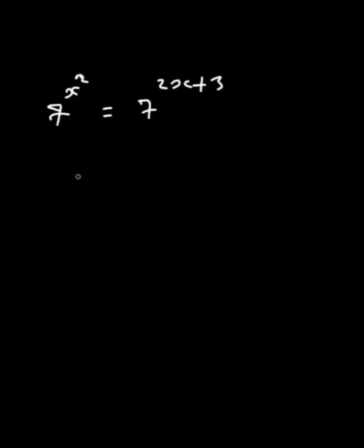This equation has the same base on the left and right. Therefore, as exponential functions are one-to-one, we see that x squared and 2x plus 3, the two exponents must be equal. This is the quadratic equation.